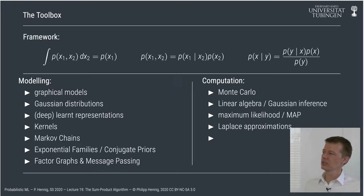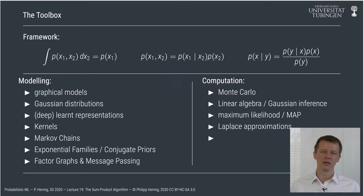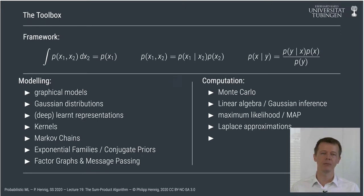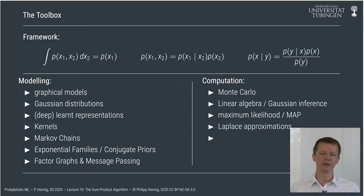We're now at a point where we could start to very rapidly list a much larger number of modeling ideas. The last 20 to 30 years of study in the machine learning community have given rise to a large zoo of models that can be used to describe a large number of individual data sets. One way to end this course would be to have a rapid-fire list of these model classes, going through one model class per lecture until the end. I don't want to do that though, because you're not going to be able to remember all of these models.